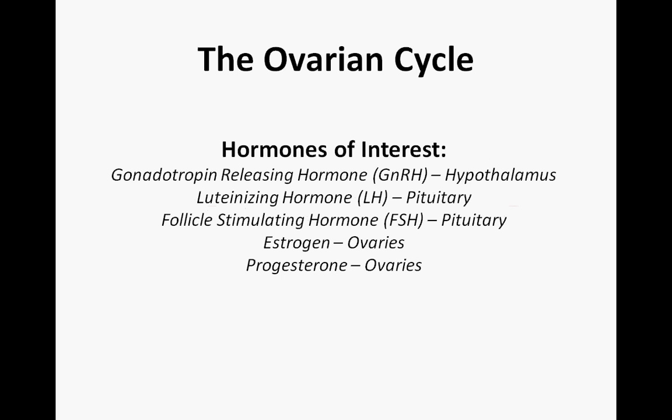Through these cycles, we will follow the activity of five hormones: gonadotropin-releasing hormone (GnRH) from the hypothalamus; luteinizing hormone (LH) and follicle-stimulating hormone (FSH) from the pituitary; and estrogen and progesterone from the ovaries.